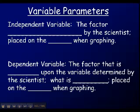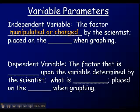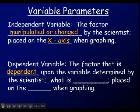Let's define some terms to help you talk about a controlled experiment. Variable parameters are things you can measure that will change during your experiment. The independent variable is the factor that is manipulated or changed by the scientist, and it's placed on the x-axis when you're graphing your results. The dependent variable is the factor that depends on what you were changing — it's what's measured as a result of your experiment, and it's placed on the y-axis when graphing.